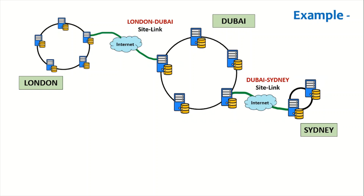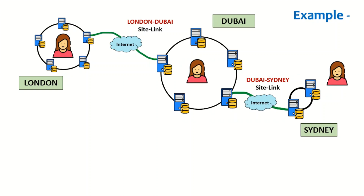Let's take an example. Say we have three sites — London, Dubai, and Sydney — and we create a user in our London site. For this user to get replicated to Sydney, it first needs to replicate to Dubai, and from Dubai it replicates to Sydney. But if the site link between London and Dubai breaks, the London site becomes completely isolated.